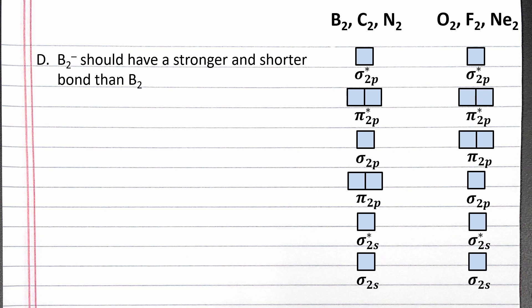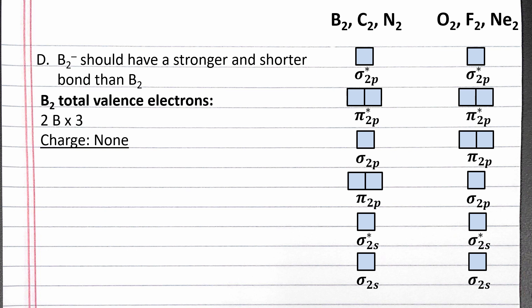To compare bond strength or length between B₂⁻ and B₂, we can compare their bond orders. Let's start by creating the molecular orbital diagram for B₂, and then adjust it for B₂⁻. For total valence electrons, each boron has 3 electrons in the second shell. B₂ isn't charged, so we don't need to make an adjustment — that means we have 6 valence electrons. We fill in the σ2s bonding molecular orbital first, then the σ2s antibonding molecular orbital. Since there are two π2p bonding molecular orbitals, we fill them singly first with the same spin, before doubling up.